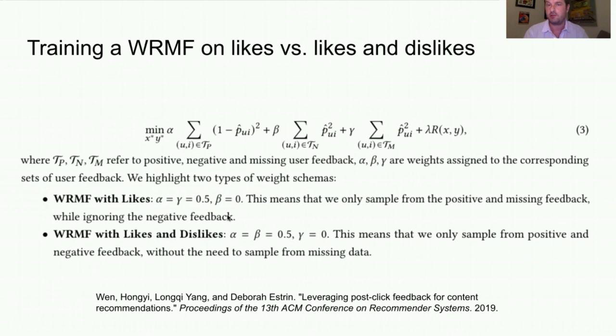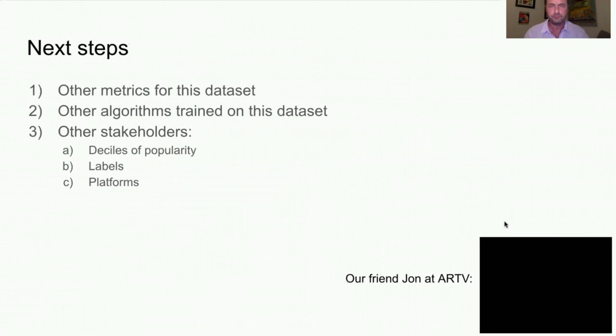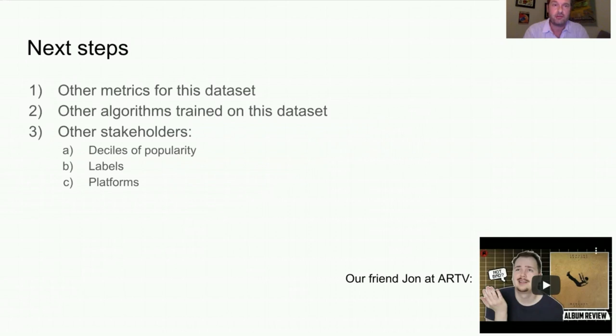After trying popularity and anti-popularity benchmarks, we find that when WRMF is trained only on likes it satisfies all stakeholders around 50 percent, and when trained on both likes and dislikes the algorithm achieves a 20 percent pickup for every stakeholder. The next step is to design more metrics on this dataset, explore how it can help train other algorithms, and examine other stakeholders not yet considered — such as labels or even the music platforms themselves.